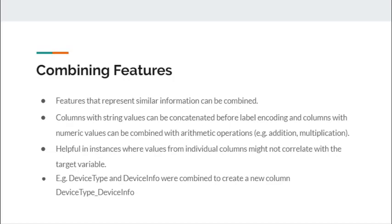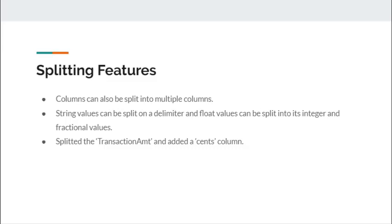The next technique is combining features. Features representing similar information can be combined: columns with string values can be concatenated before label encoding, while columns with numeric values can be combined with arithmetic operations. This is helpful when individual columns may not correlate with the target variable, but their combination could. Two columns we combined were device type and device info. Columns can also be split — string values on a delimiter, and float values into integer and fractional parts. We split the transaction amount and created a new column comprising its cents value.